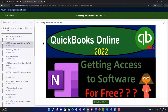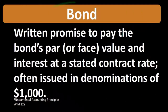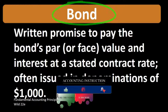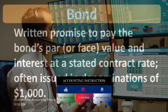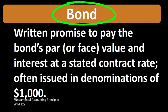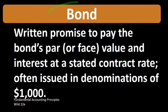According to Fundamental Accounting Principles, Wild 22nd edition, the definition of a bond is a written promise to pay the bond's par or face value and interest at a stated contract rate, often issued in denominations of $1,000. When we think of bonds as individuals, we may think of investing in stocks and bonds — bonds being a form of investment such as treasury bonds or corporate bonds. Here, we will be looking at the definition of a bond from the perspective of the issuer.